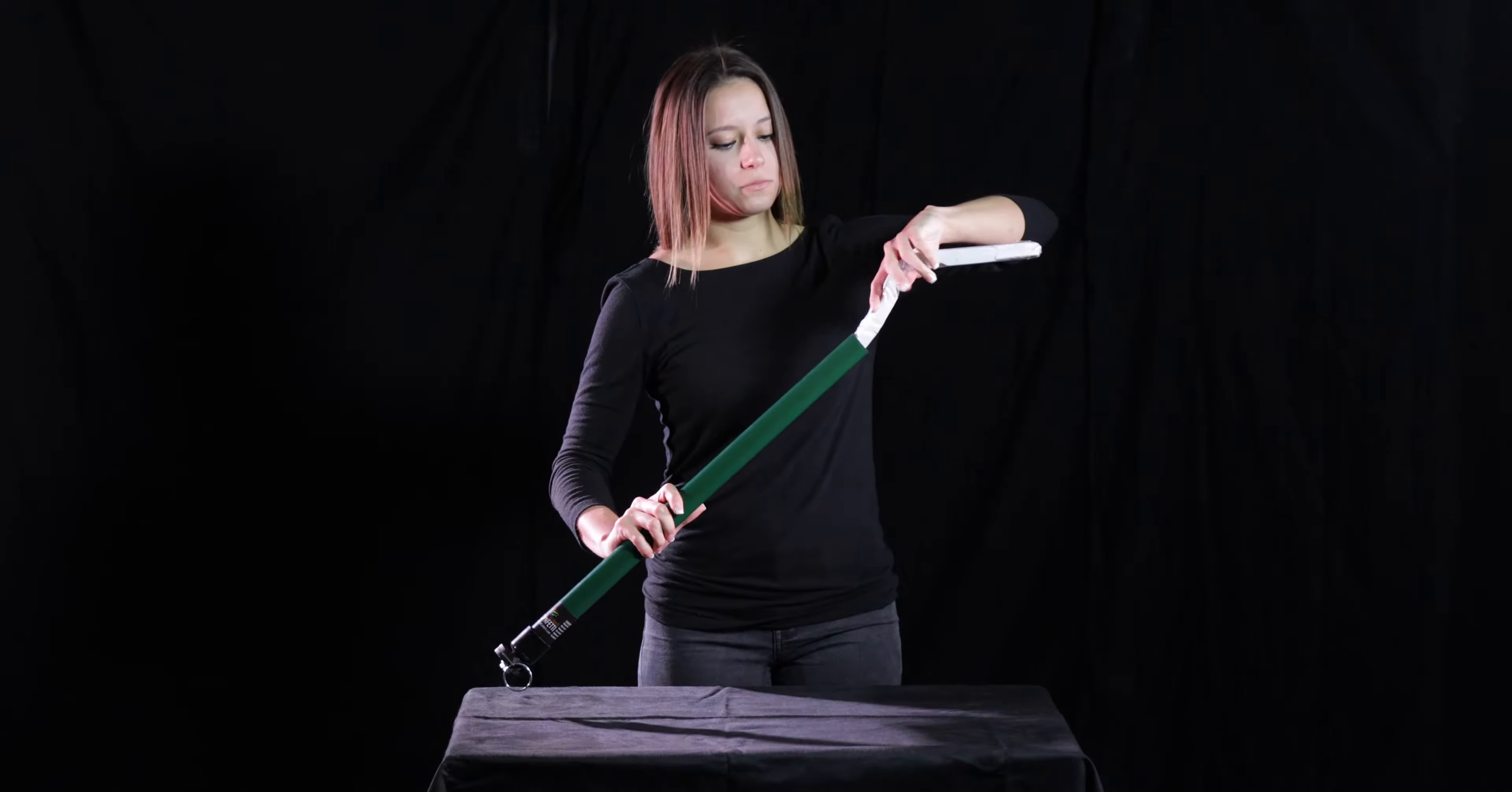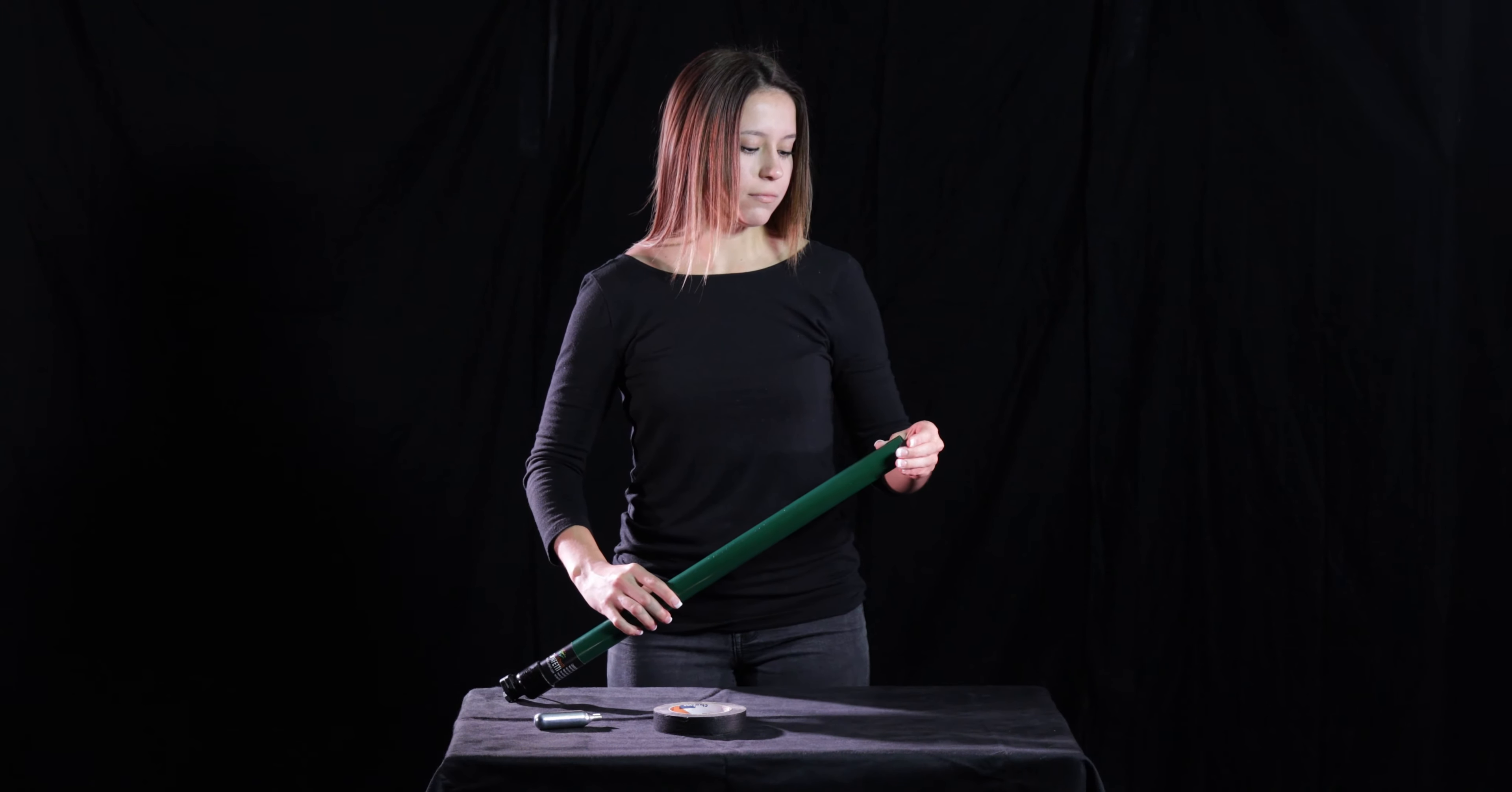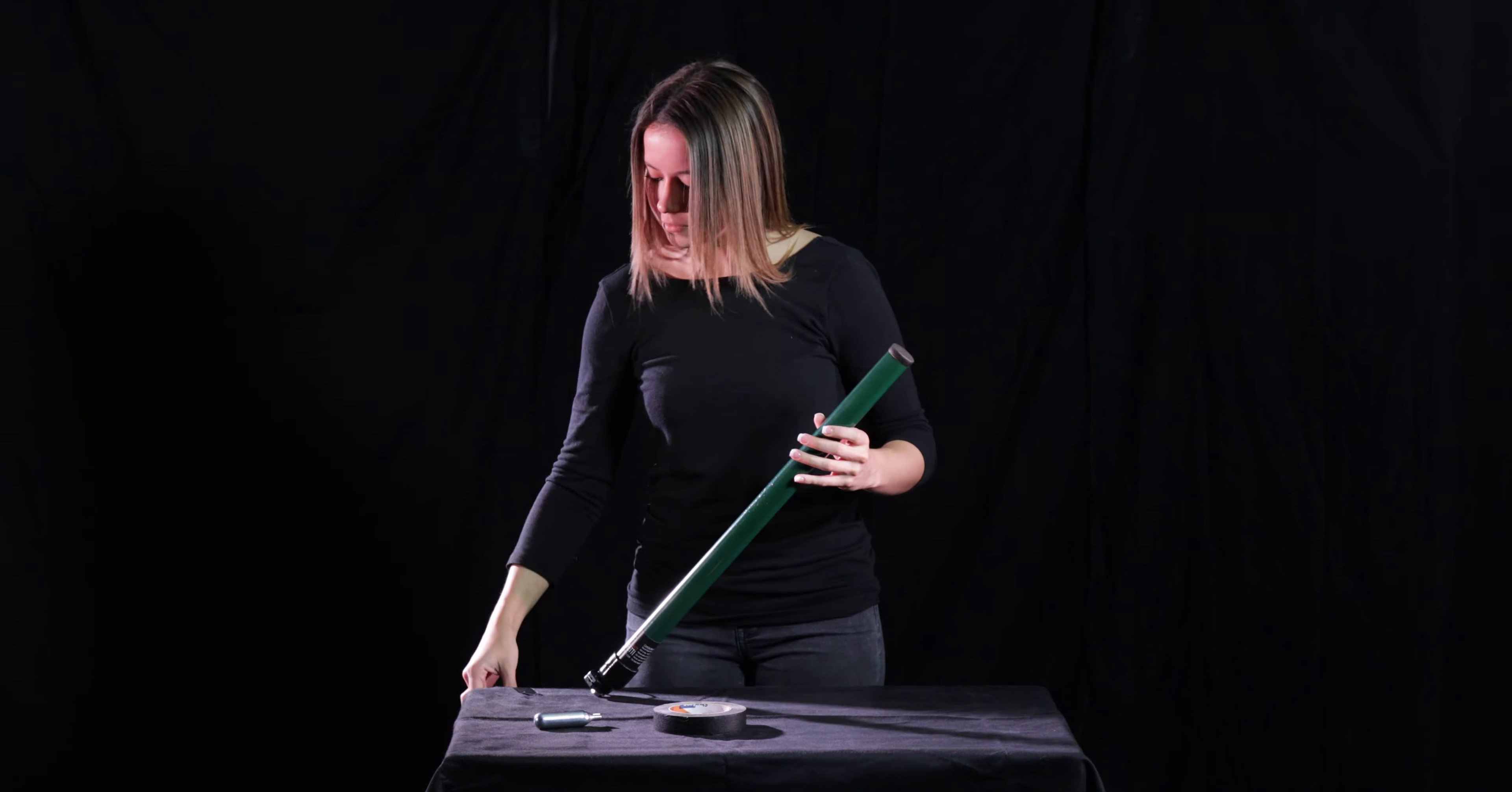Simply load a sleeve of confetti or streamers into the barrel. Once the sleeve is loaded, tape on a compression cap by wrapping tape around the edge of the cap one and a half times.